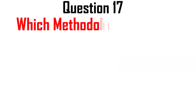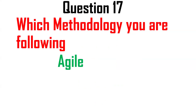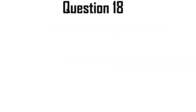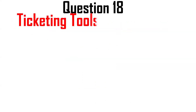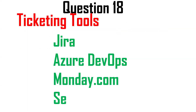Next question: which methodology do you follow? We follow Agile methodology. Most companies today use Agile rather than Waterfall. Next question: ticketing tools. These include Jira, Azure DevOps, Monday.com, and ServiceNow. Depending on the company, one of these tools is used to track tasks and issues.